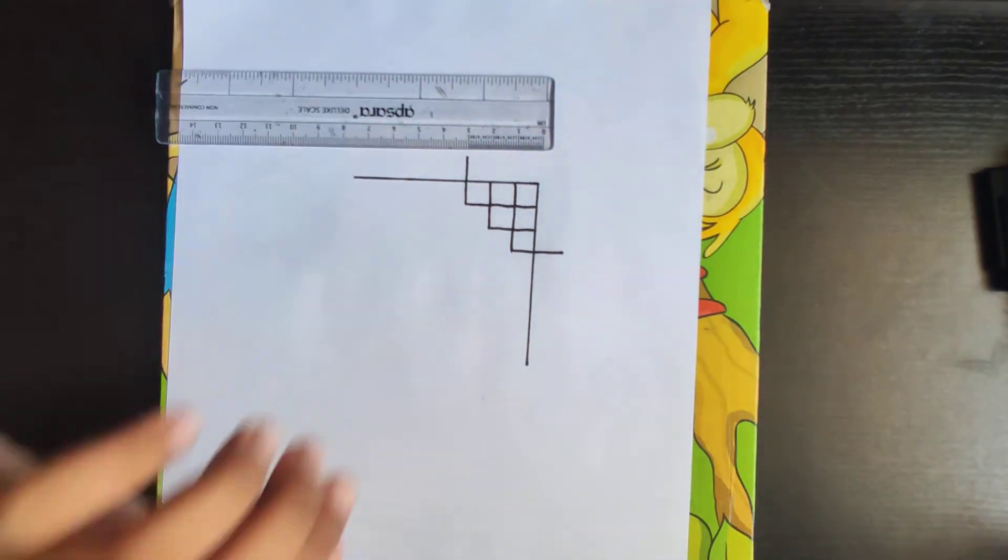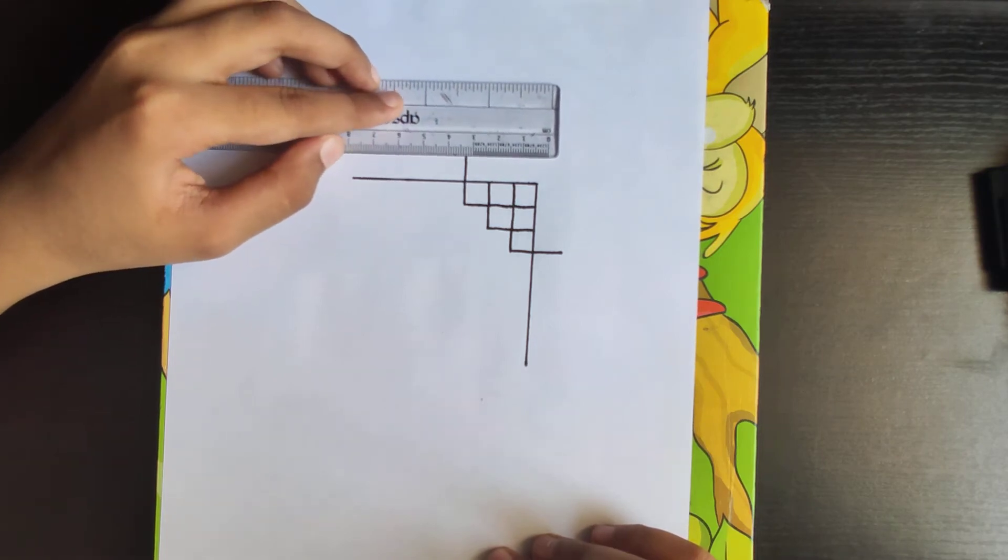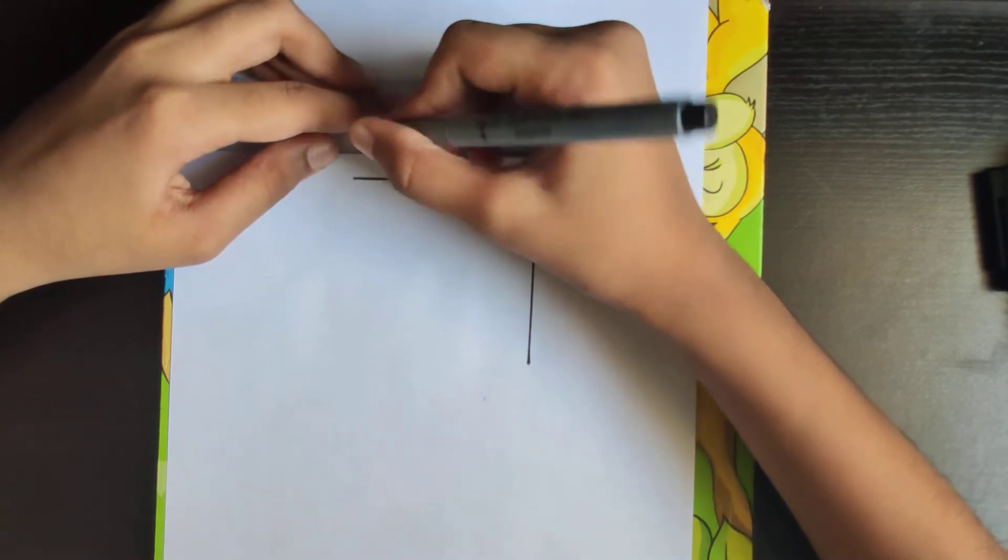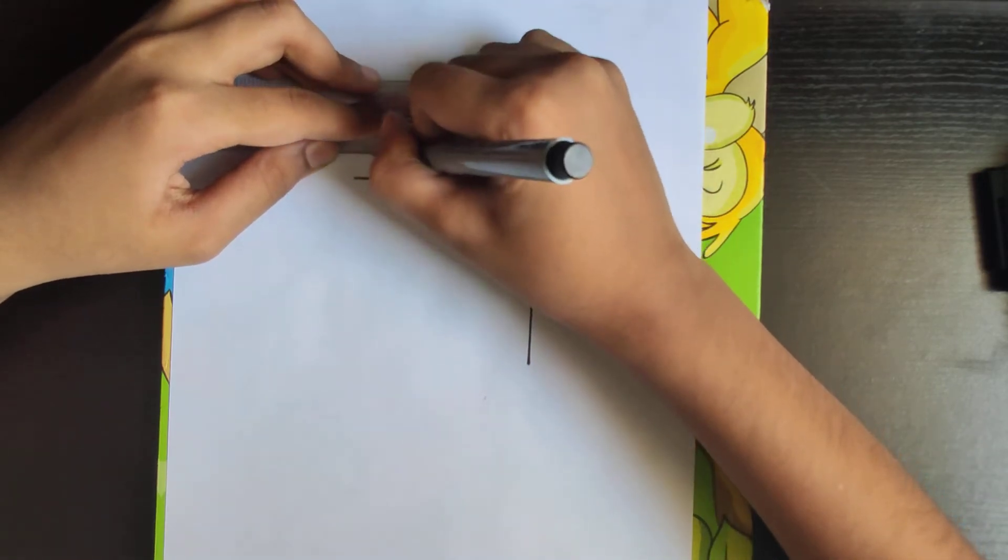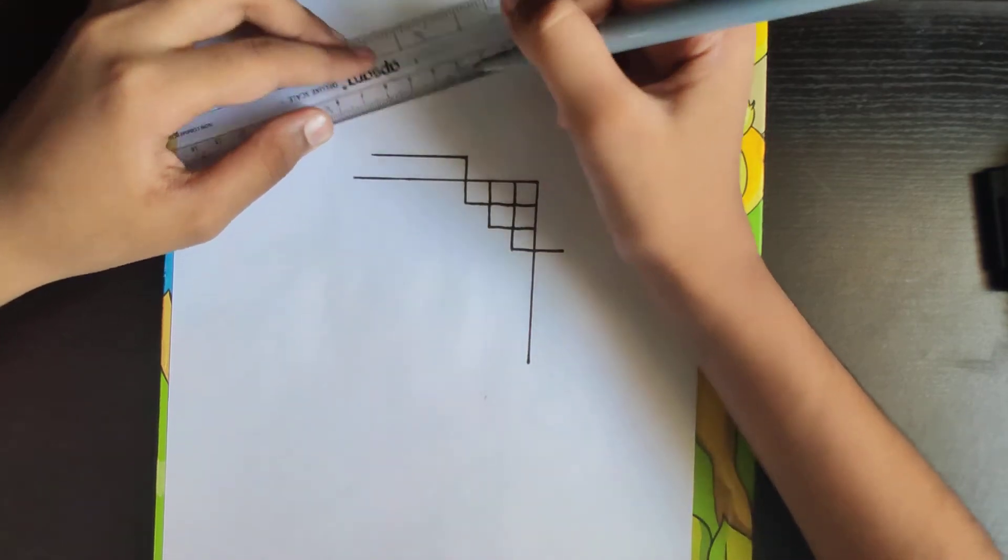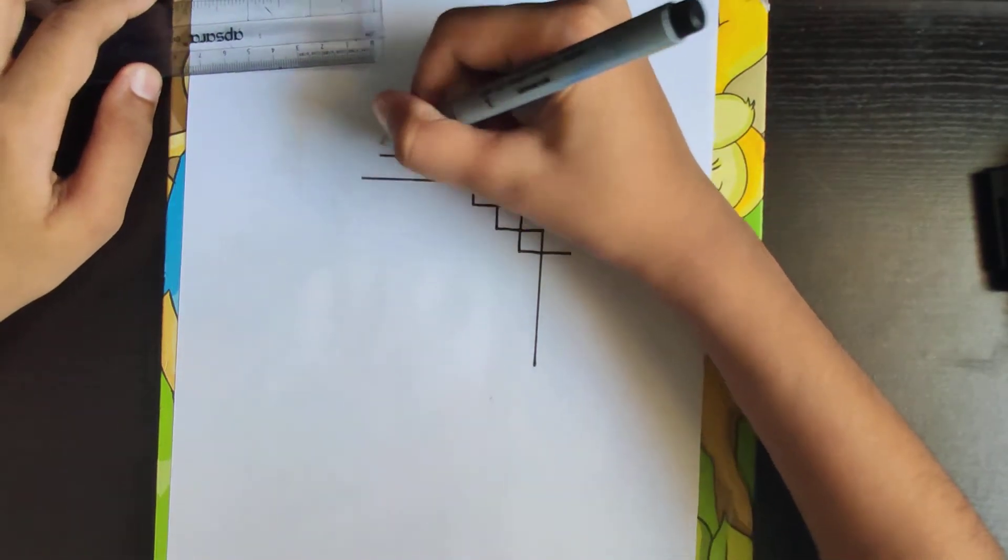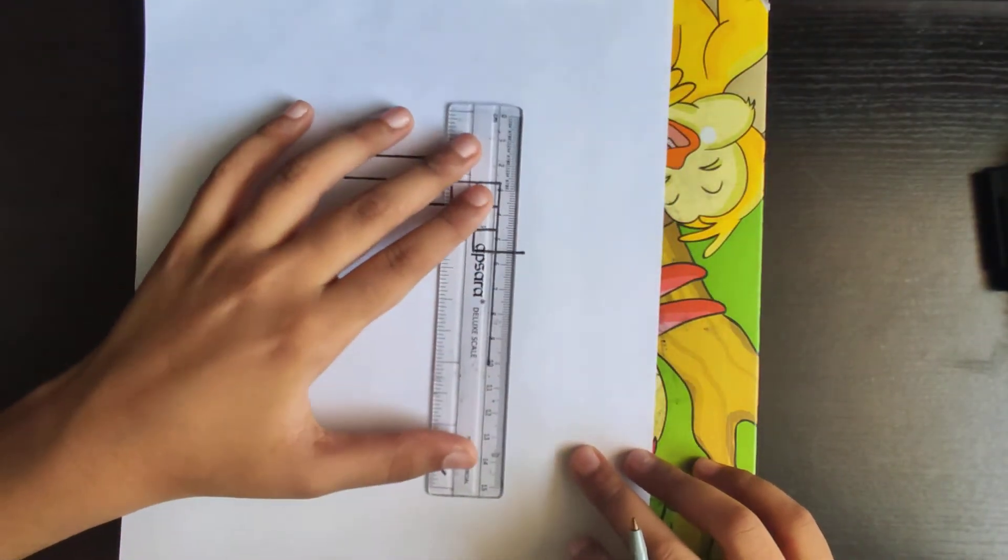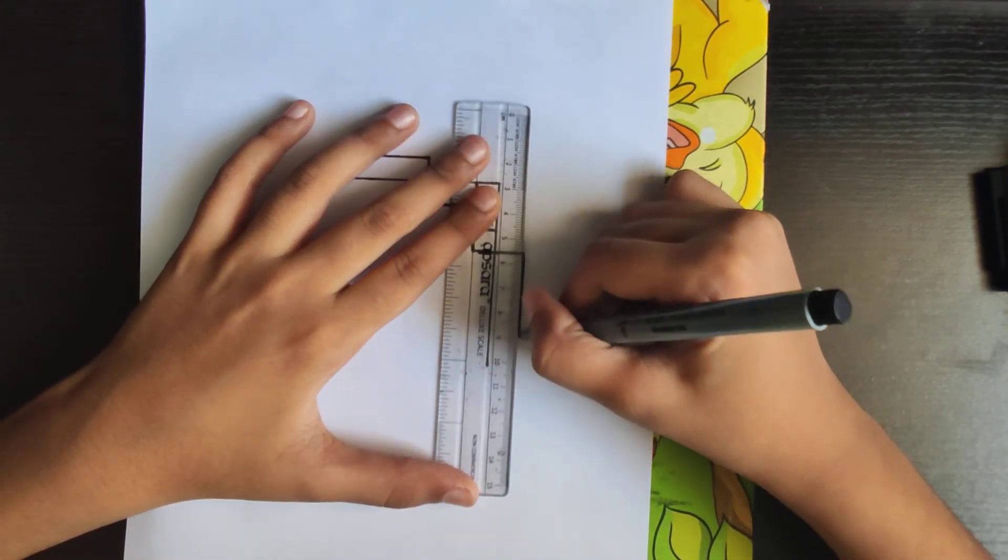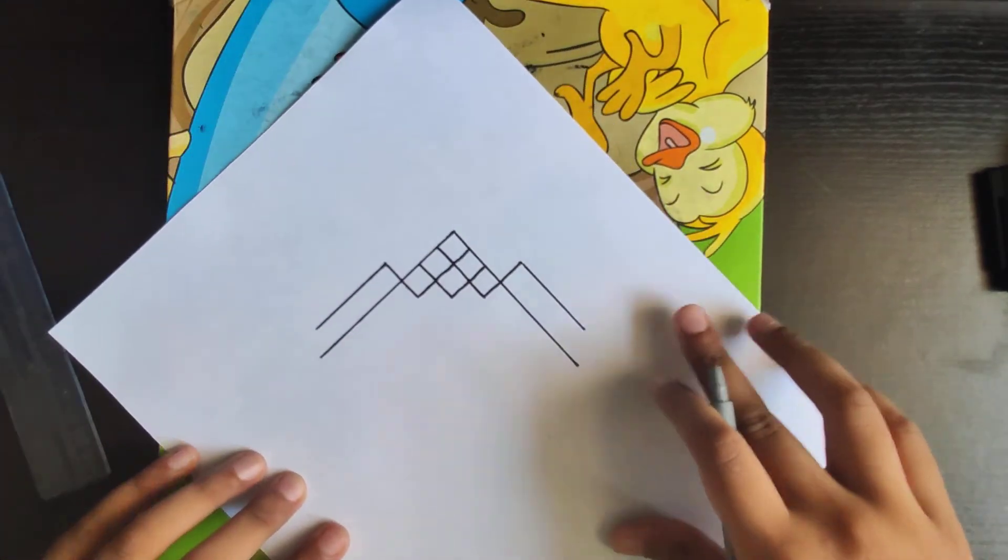Now take your scale and make a straight line like this. Another one. Take your scale and make a straight line like this.